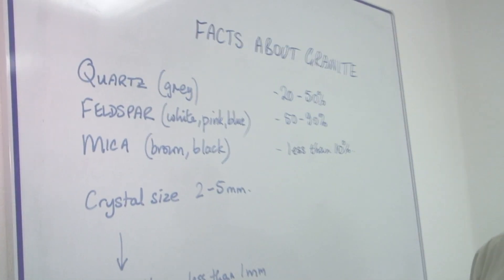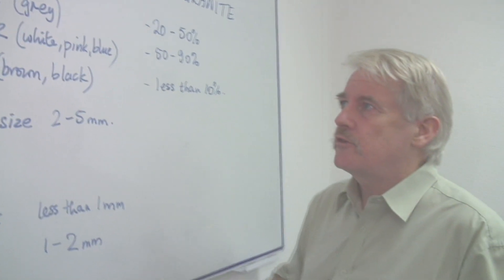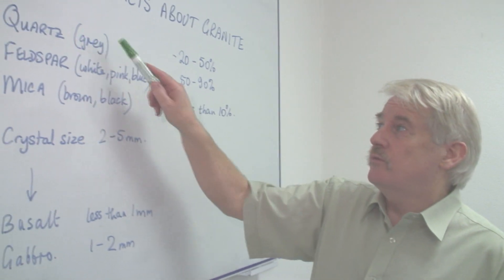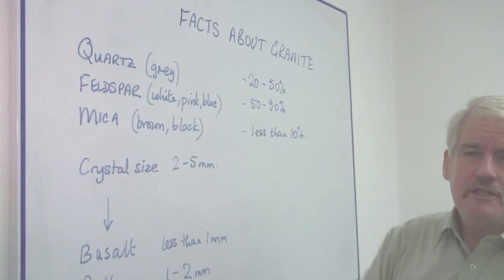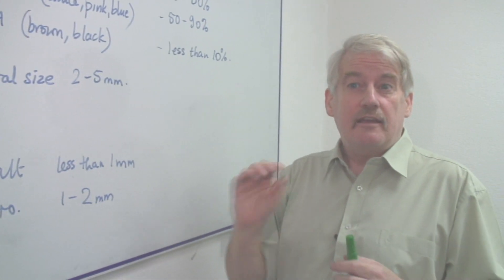Well the answer is it is a rock made up of three or four basic minerals. Quartz is one of the main two. That's a greyish material when you look at it, but normally it's actually transparent.